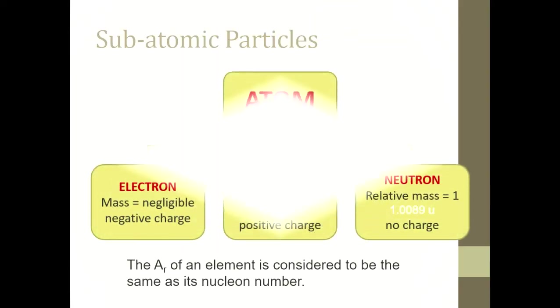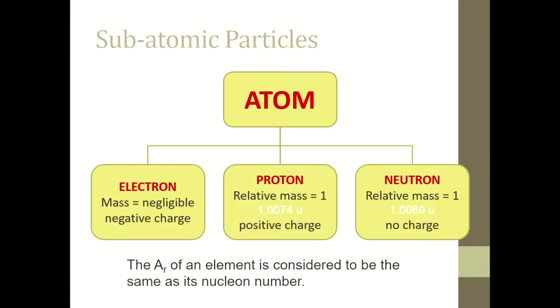So if we look at the mass of proton, it's actually 1.007 U. U is the unit for atomic mass. And then, neutron has the mass 1.0089 U. So if we add together proton and neutron, this is what we have or called nuclear number. Therefore, the relative atomic mass or AR of an element is actually considered to be the same as its nuclear number.